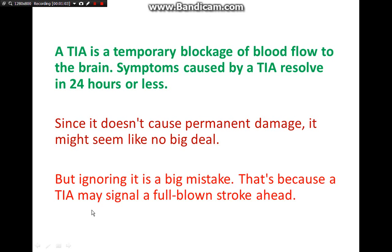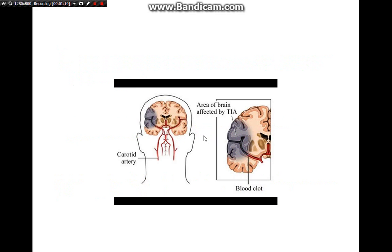TIA may signal a full-blown stroke ahead, so it can be a warning sign. Let us talk about the different types of TIA according to the different territory of the brain involved. If the carotid is involved, it affects the anterior part of the brain — what we call the anterior circulation. Sometimes it is also vertebrobasilar, what we call the posterior circulation, affecting the posterior part of the brain.